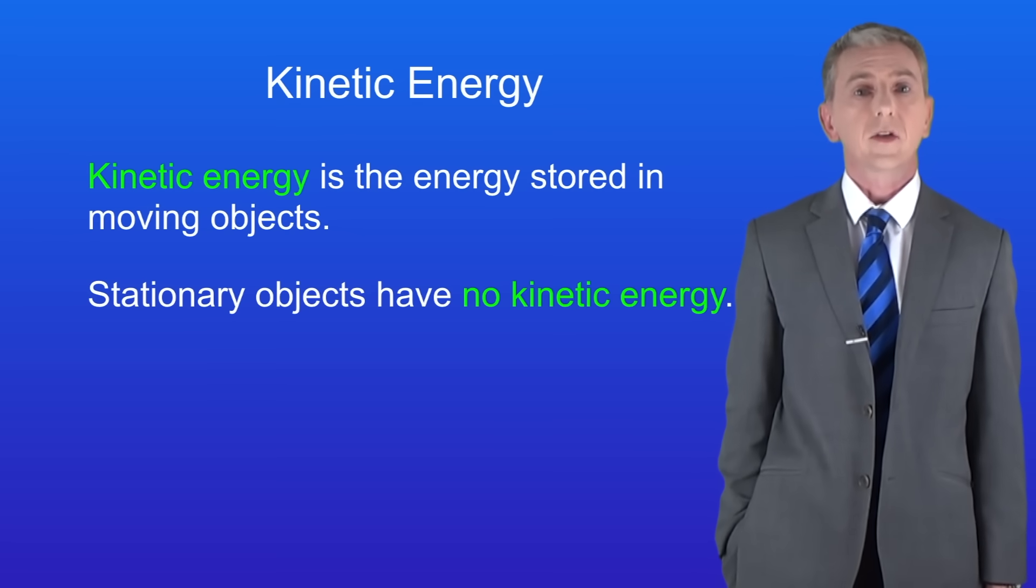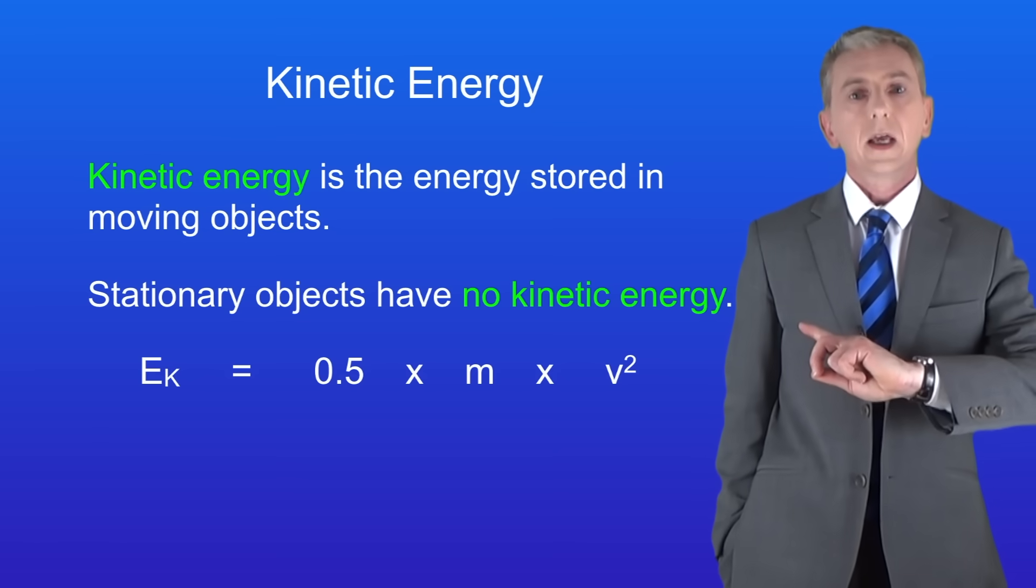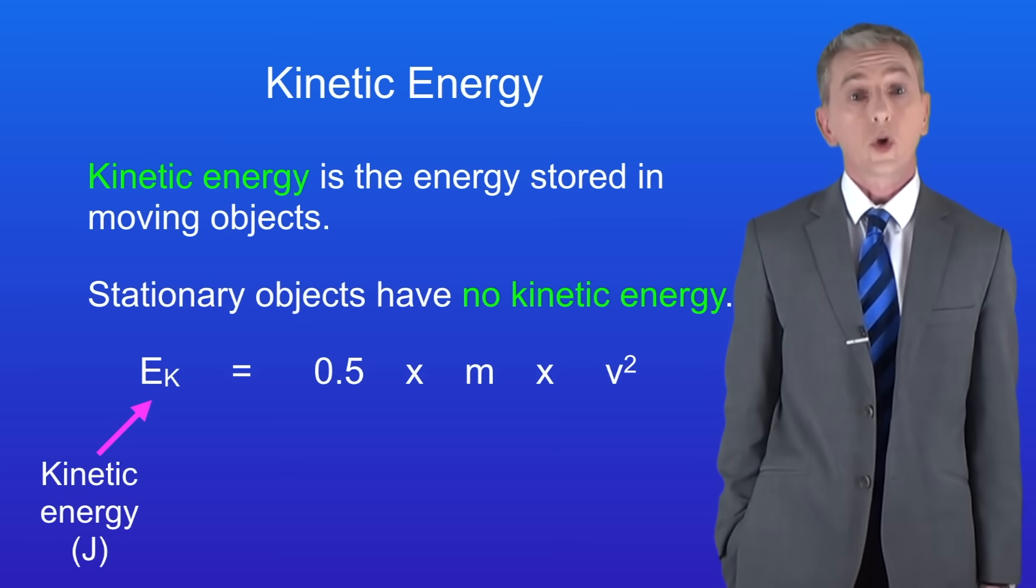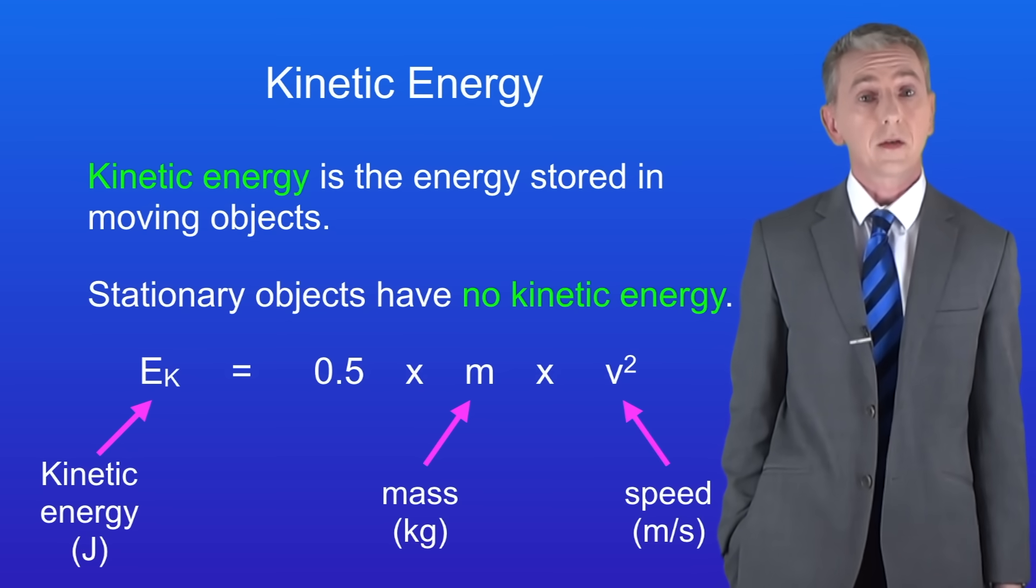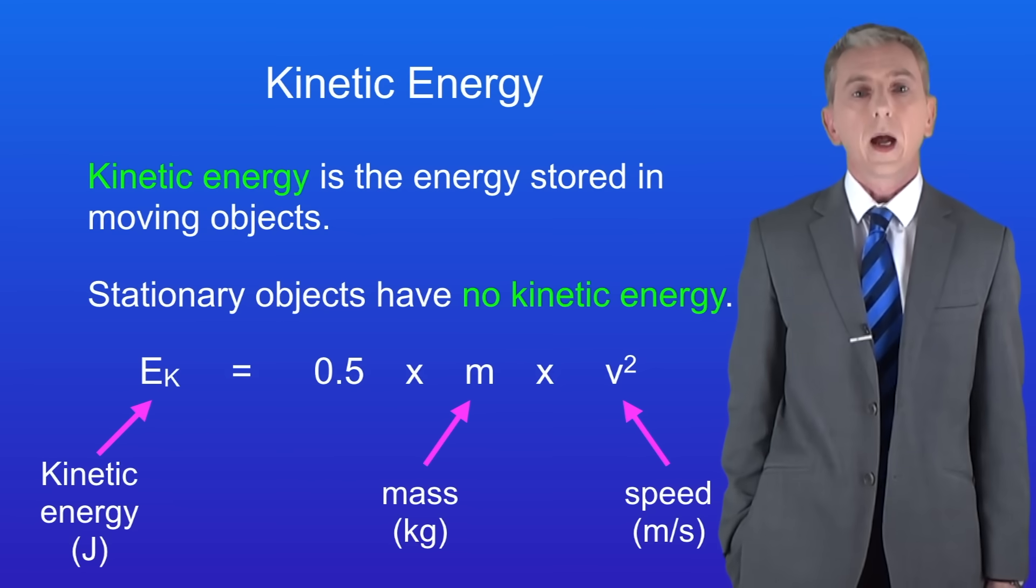Now we calculate kinetic energy by using this equation. Kinetic energy in joules is 0.5 multiplied by the mass of the object in kilograms multiplied by the speed of the object squared, and the unit of speed is meters per second. Now I should point out something really important here. You're not given this equation in the exam so you've got to learn it.